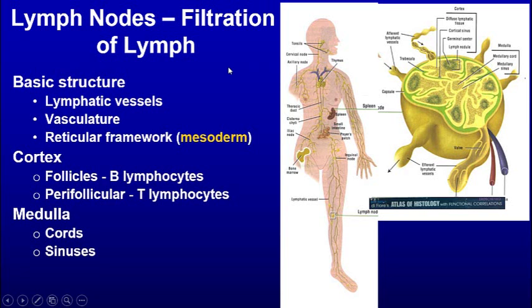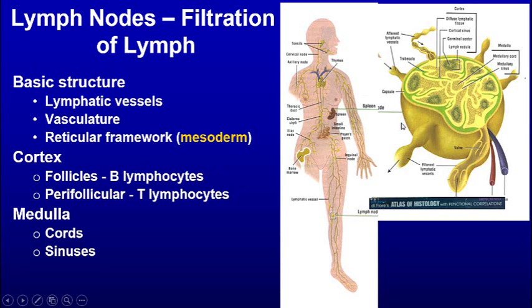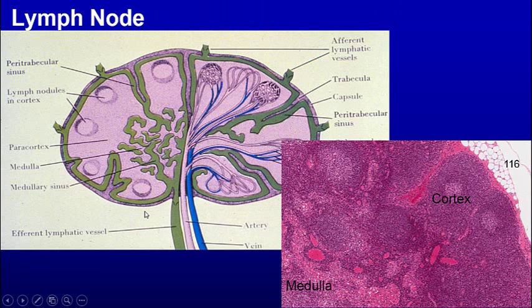In the lymph node, you have afferent lymph sinuses coming in and efferent lymph sinuses going out, with lymphatic sinuses inside as well. The reticulum network in the lymph node is from the mesoderm — more like connective tissue, not from epithelium. We'll talk about the basic structures: follicles in the cortex and medulla, which have a germinal center, and dendritic follicular cells that we want to be able to see.